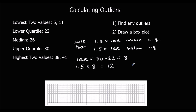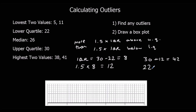So we're going to look for any numbers more than 12 above the upper quartile. The upper quartile was 30, so 30 plus 12 is 42, and there are no numbers above 42. And more than 12 below the lower quartile — so 22 minus 12 is 10. There is one number below 10, which is 5. So 5 is an outlier.